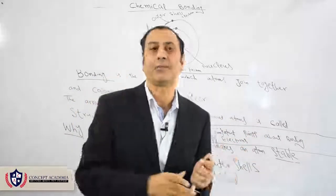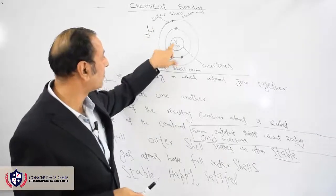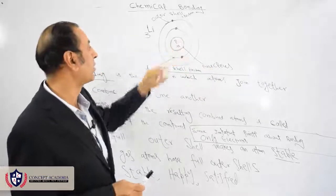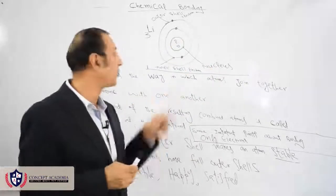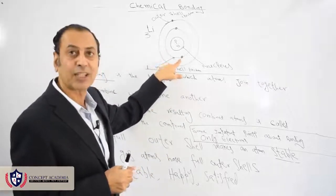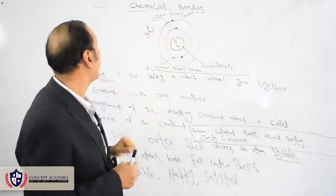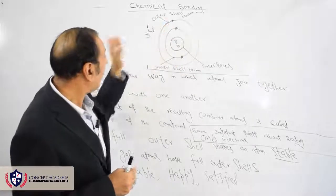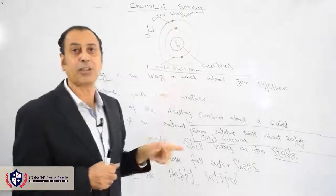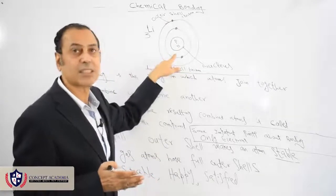For example, if I have lithium, lithium has three electrons. There's a nucleus which contains protons and neutrons, and there are three electrons. The first shell contains two electrons and the second shell contains one electron. Only the last shell electron, the outer shell electron, takes part in bonding. Inner shell electrons do not take part in bonding.